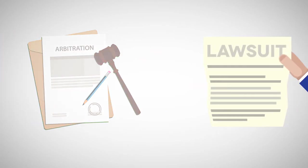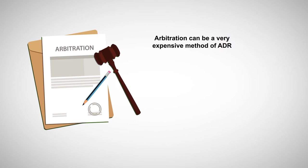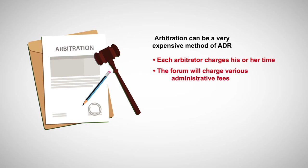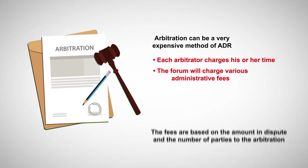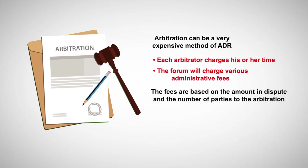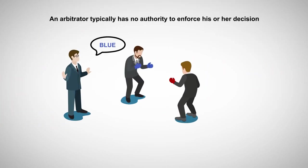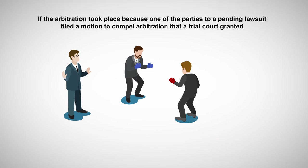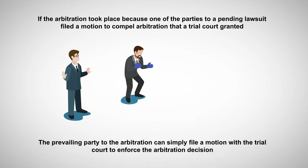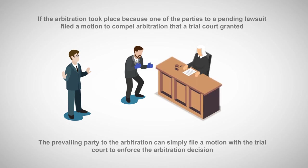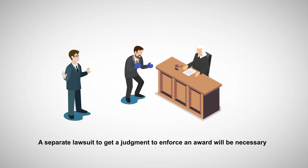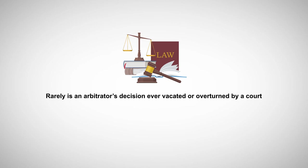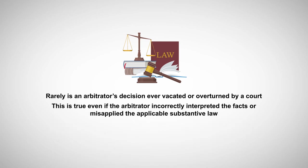Though its costs may pale in comparison to lawsuits, arbitration can be a very expensive method of ADR. In addition to each arbitrator charging for his or her time, the arbitration forum will charge various administrative fees, often based on the amount in dispute and the number of parties. An arbitrator typically has no authority to enforce his or her decision. Therefore, it may be necessary for the prevailing party to file a lawsuit to enforce the arbitrator's award. If the arbitration took place because a trial court granted a motion to compel arbitration, the prevailing party can simply file a motion with the trial court to enforce the decision. Otherwise, a separate lawsuit to obtain a judgment will be necessary. As previously noted, rarely is an arbitrator's decision vacated or overturned by a court, even if the arbitrator incorrectly interpreted the facts or misapplied the applicable substantive law.